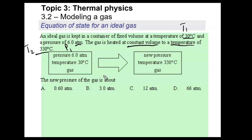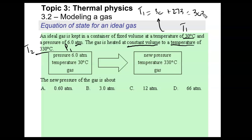The first thing I recognize is that these temperatures are in Celsius, so I have to convert them to Kelvin, because any equation that has temperature must be in Kelvin. A change in temperature can be in either one, but temperature by itself must be in Kelvin. So T1 = 30 + 273 = 303 Kelvin. And T2 = 330 + 273 = 603 Kelvin.